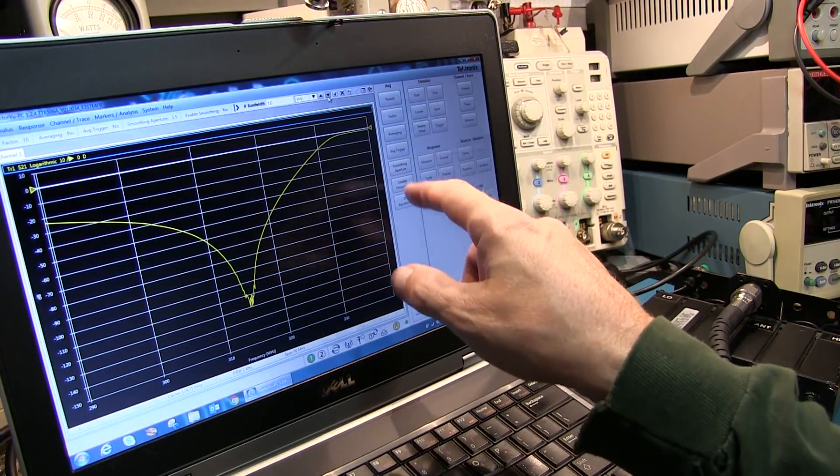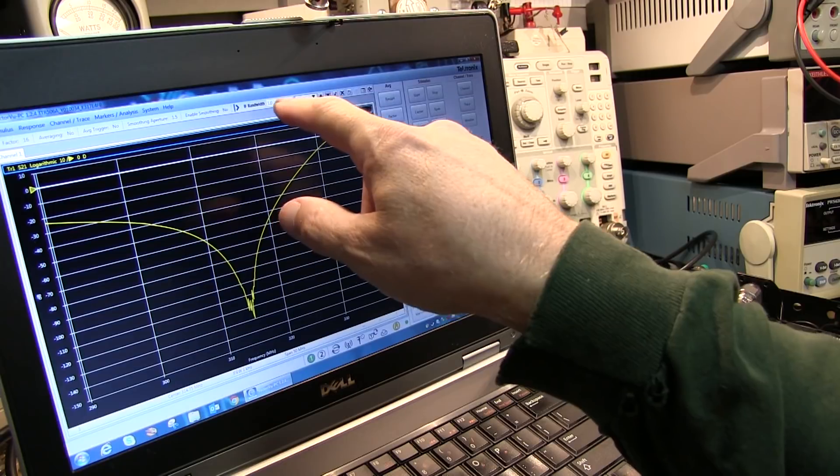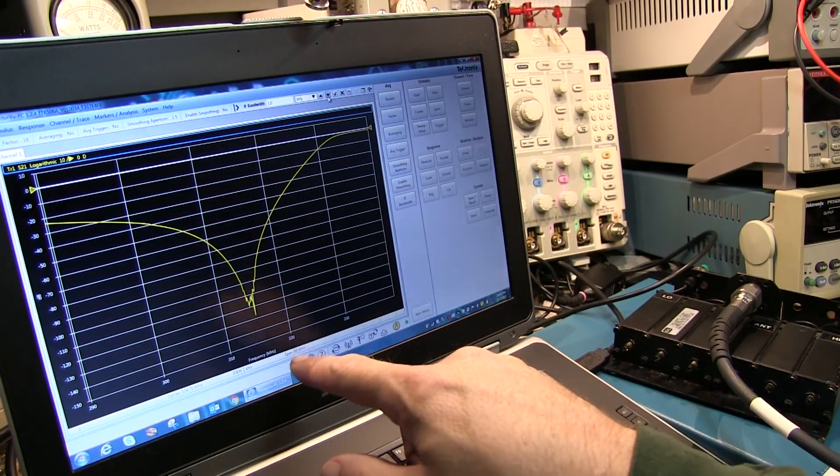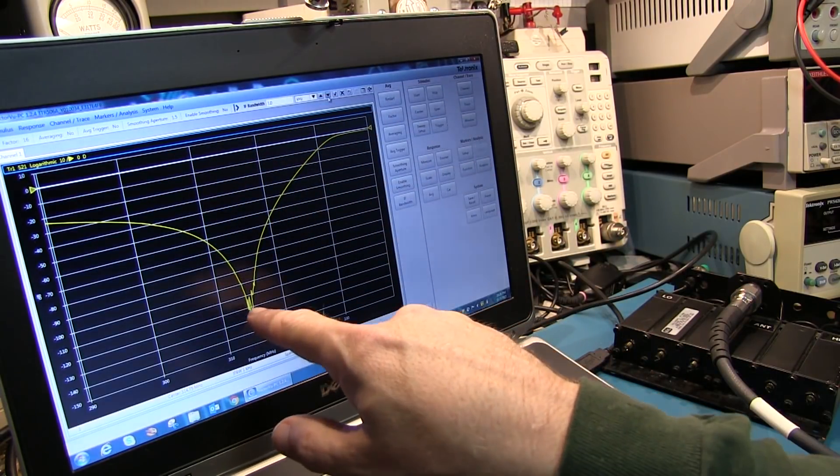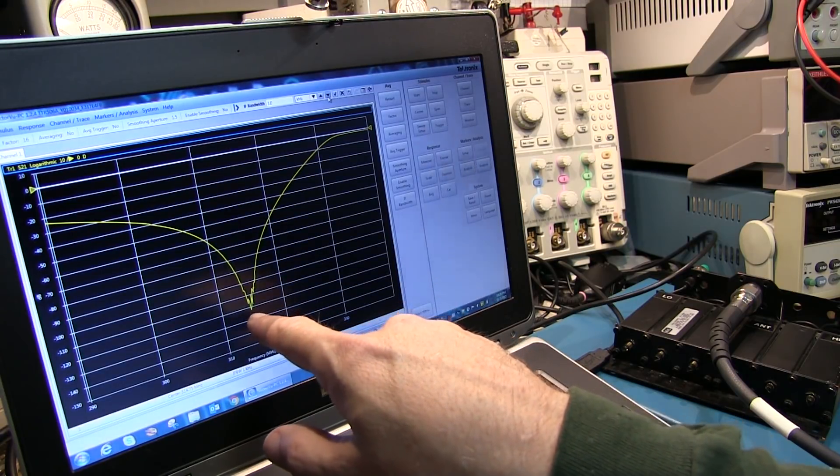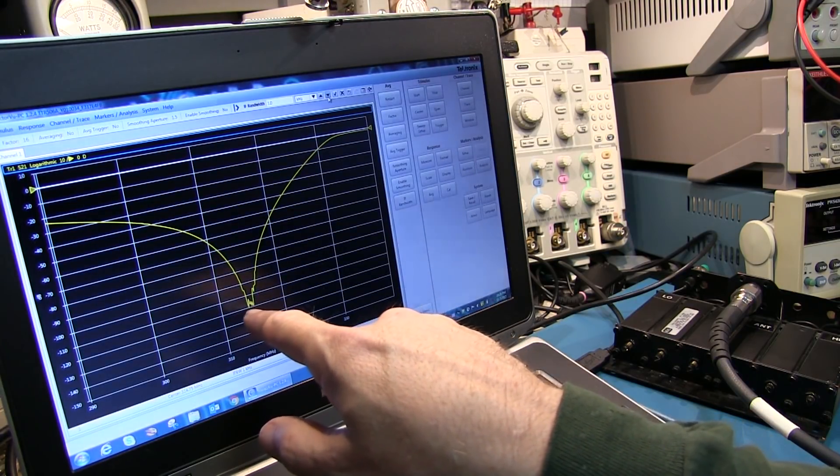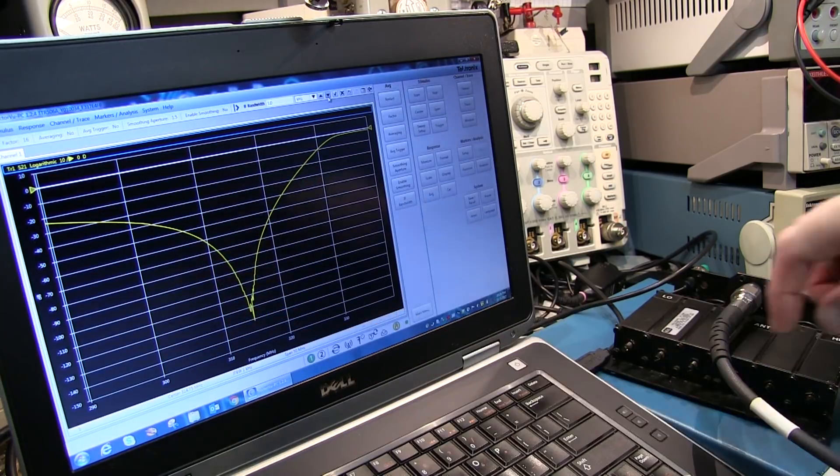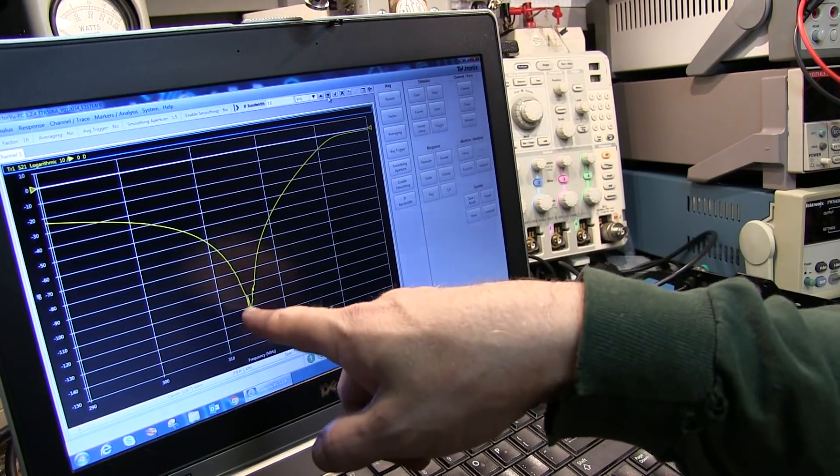I made one small change here. I reduced the IF bandwidth down to one kilohertz. The sweep speed's gotten slower, but now I can see that notch is actually closer to about 120 dB. And I see it's coming down pretty much to a point, which means I've got each of those cavities pretty much lined on top of each other.